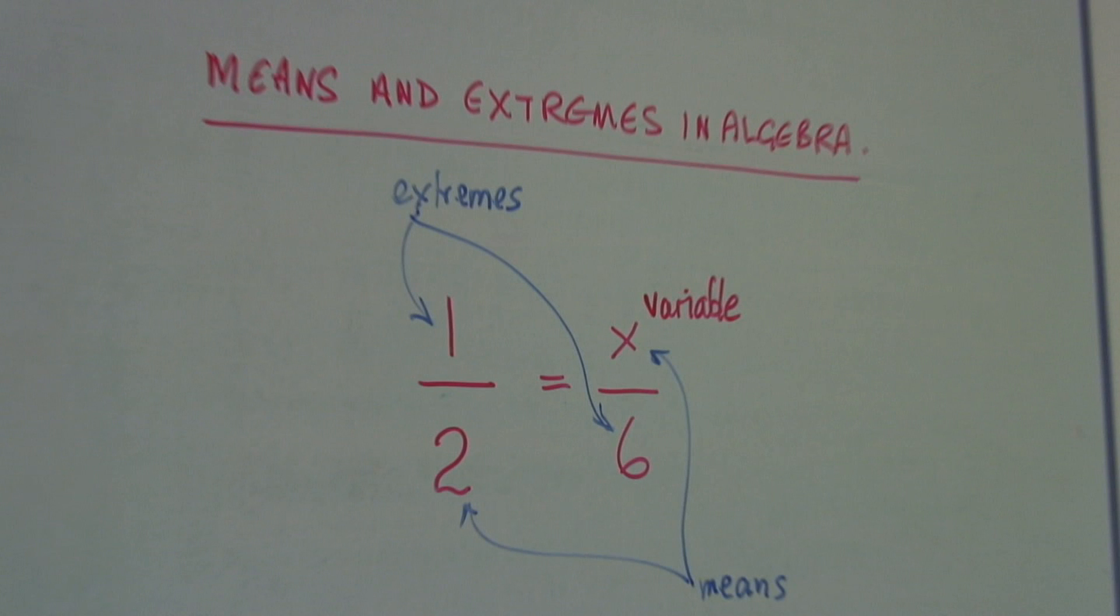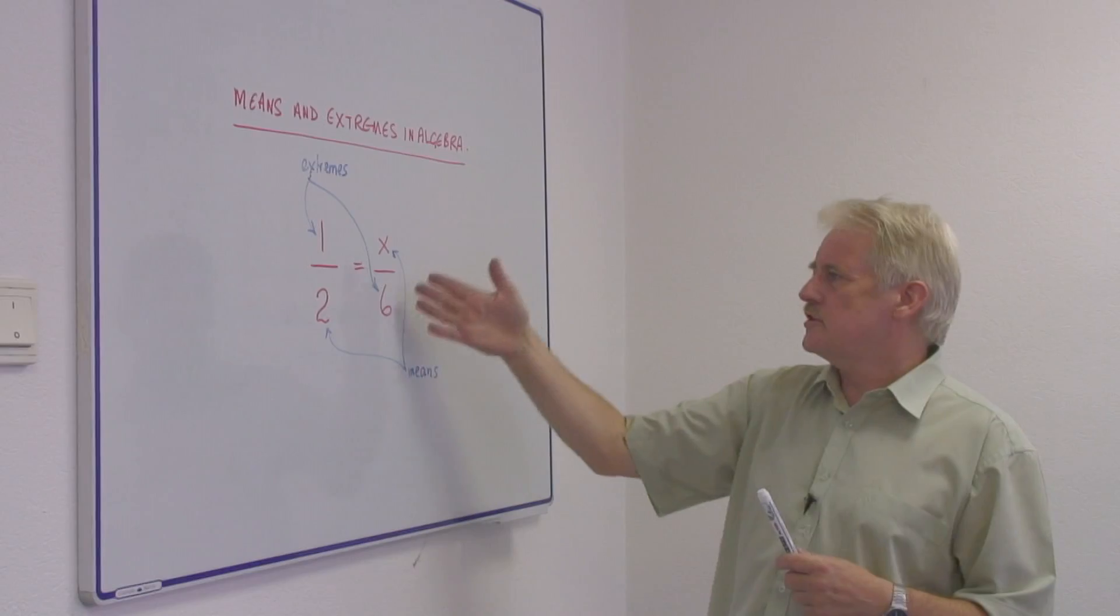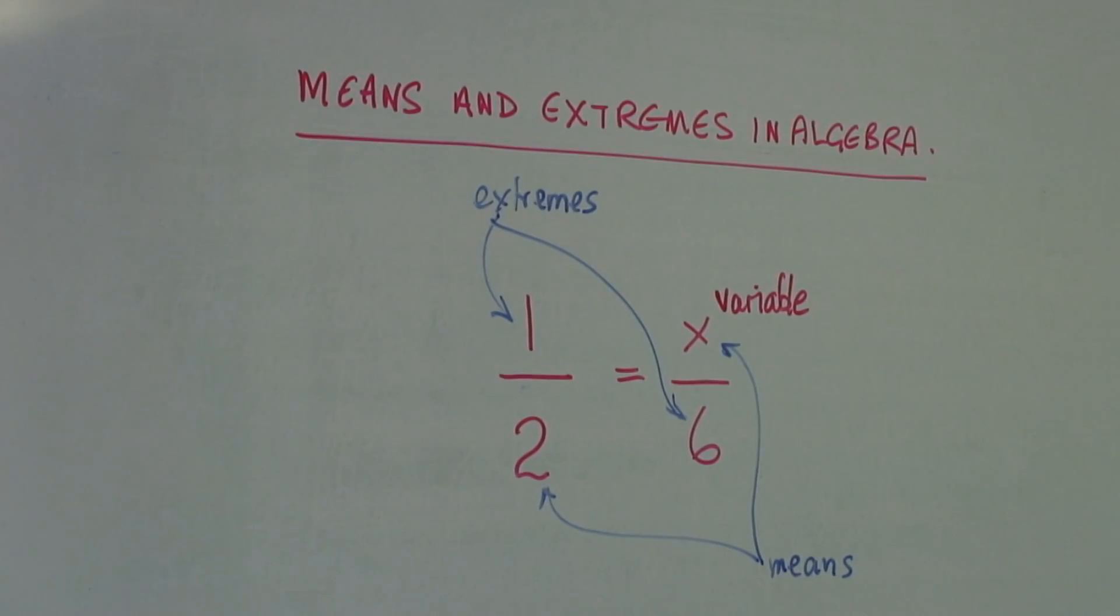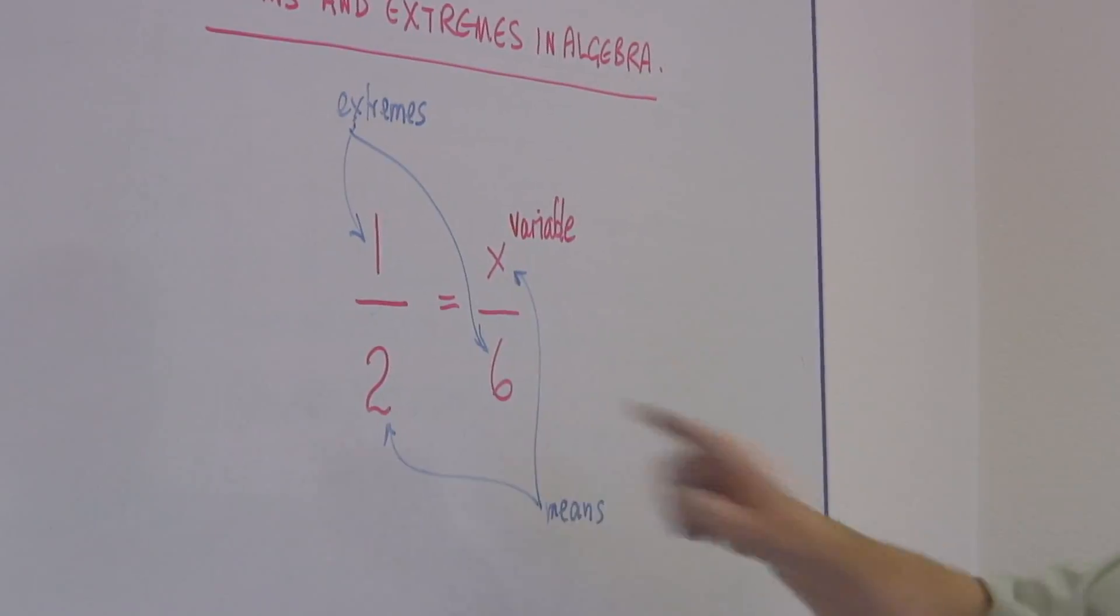A proportion of 1 divided by 2, and on this side, a variable x, and that is divided by a number 6. So we've got a proportion x divided by 6.